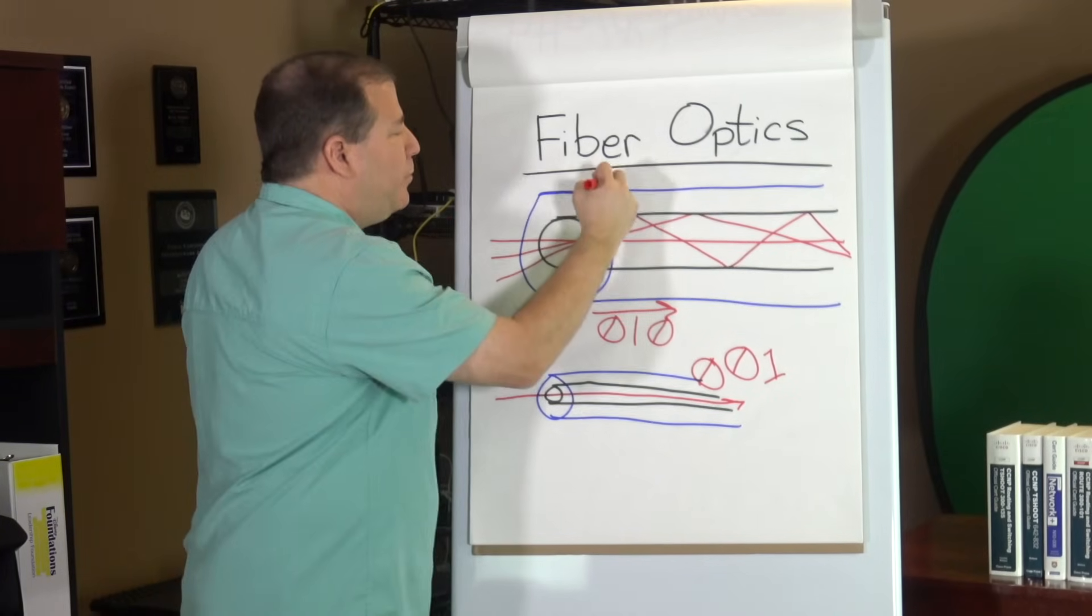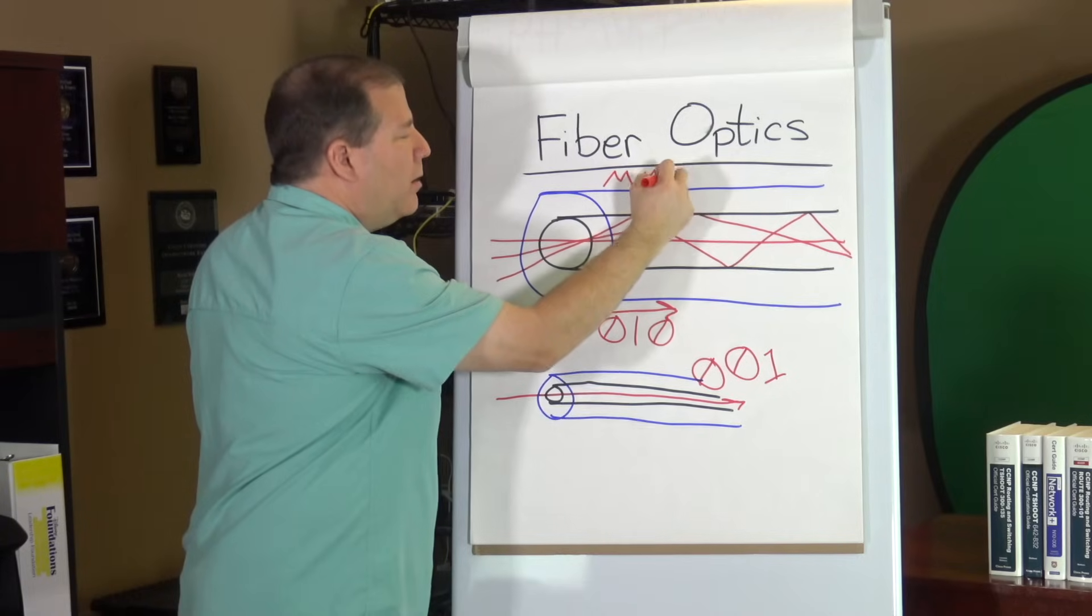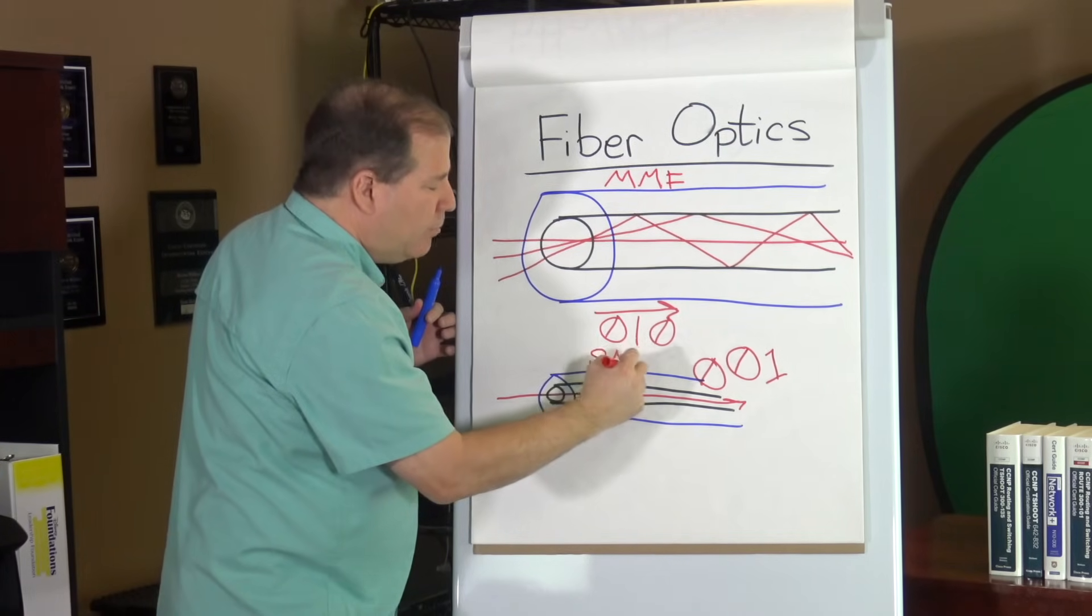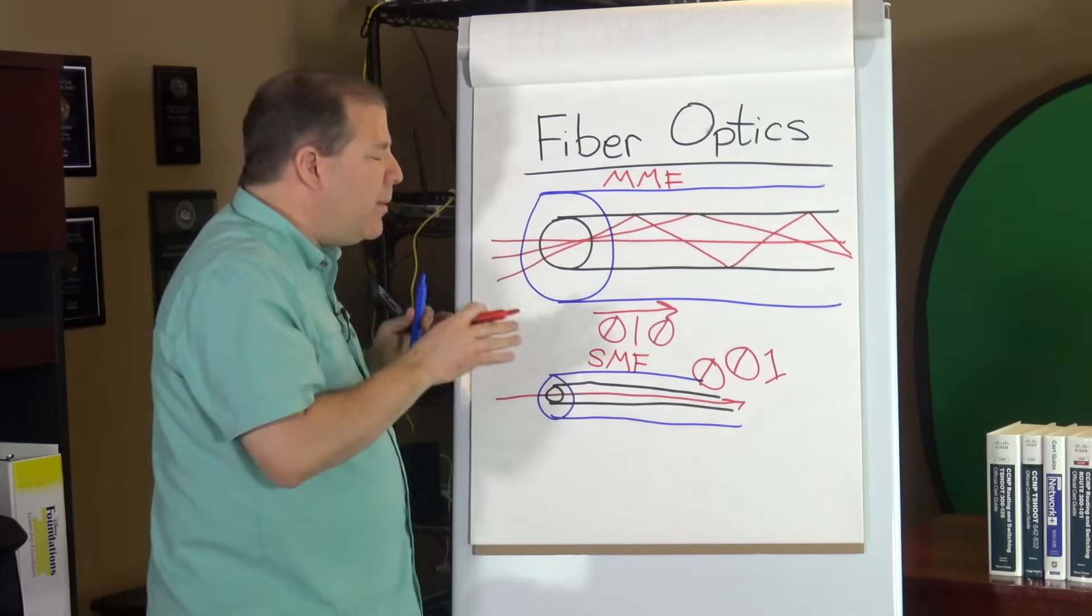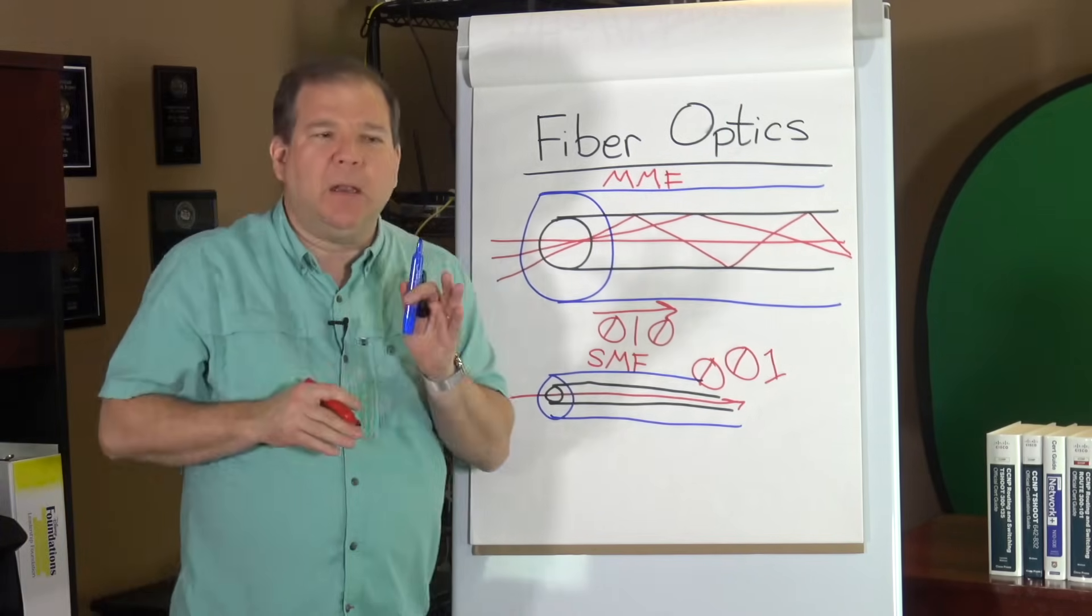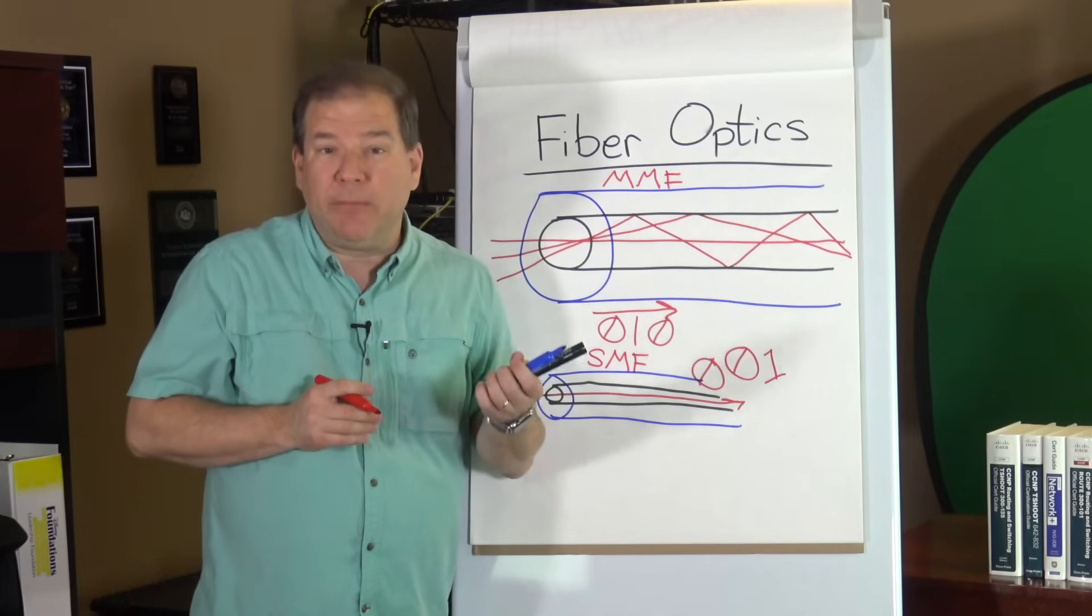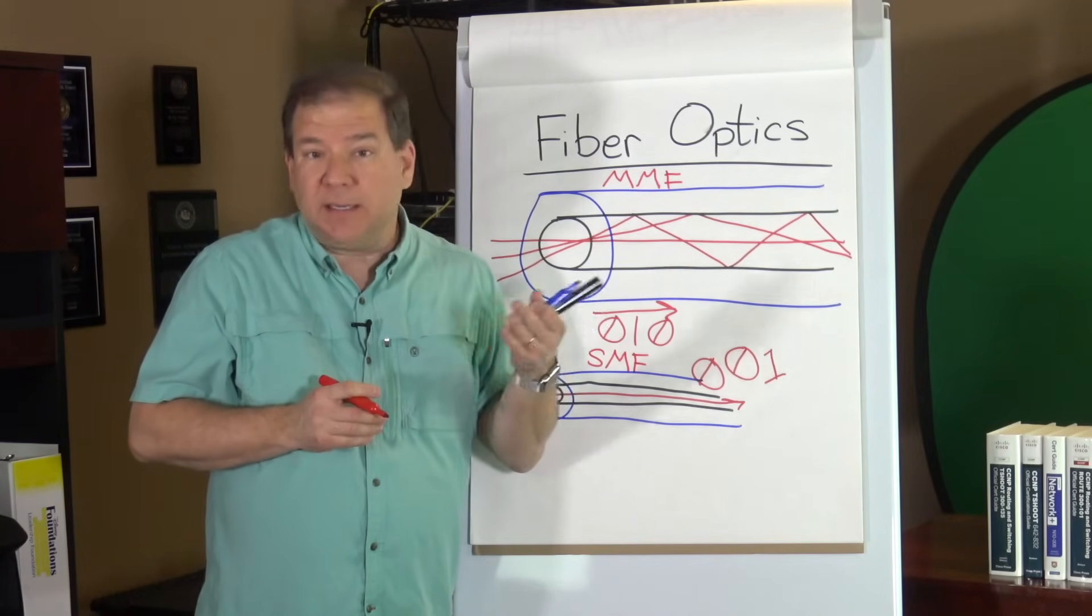You're oftentimes going to see this type of fiber optic cable referred to as multi-mode fiber, and the bottom type is referred to as single-mode fiber. Those are a couple of different types we have. Now, let's go out to some slides and take a look at some specific types of cables, connectors, and distance limitations.